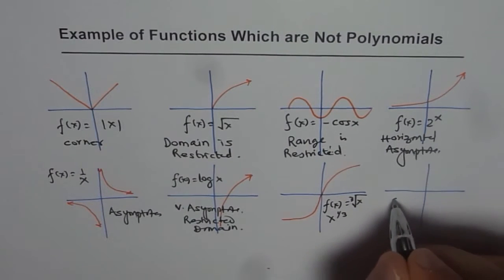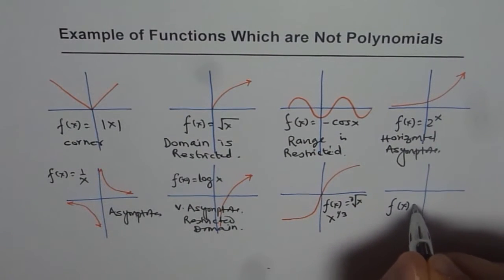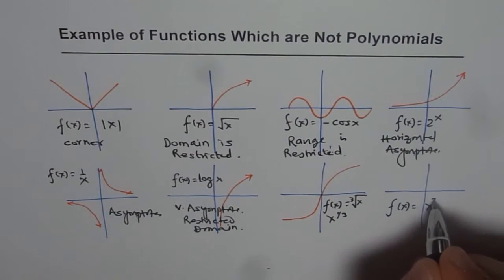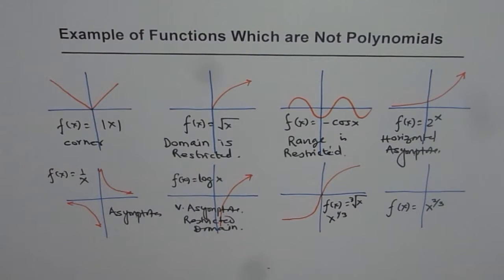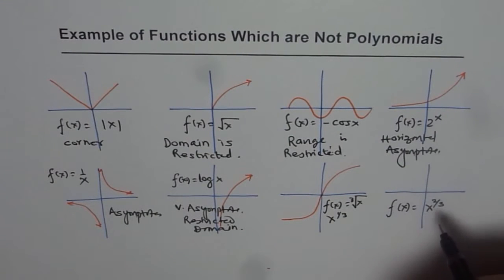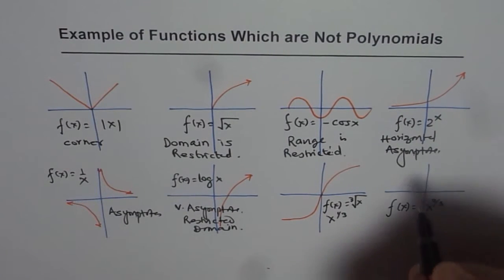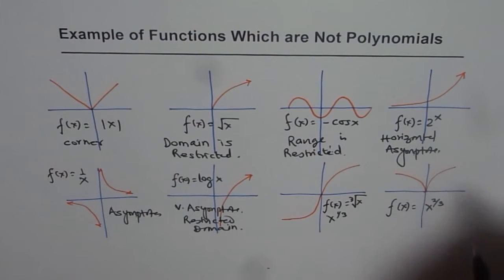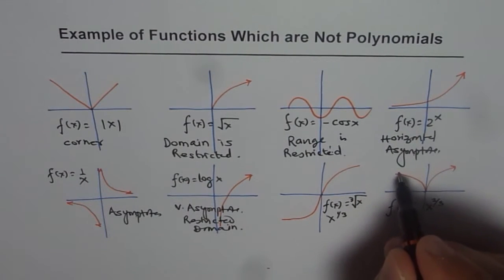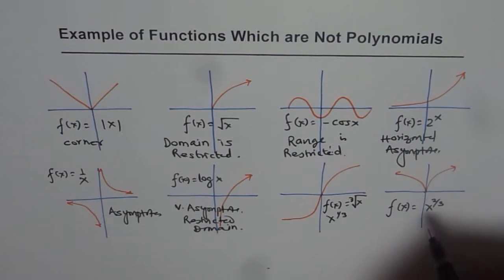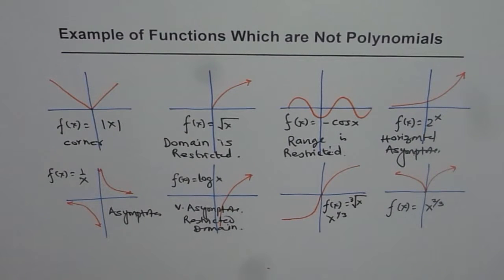We could also have f(x) = x^(2/3), which is a radical function. It will have a cusp or a corner at x = 0. Polynomials do not have a cusp or corner, so this function is also not a polynomial.